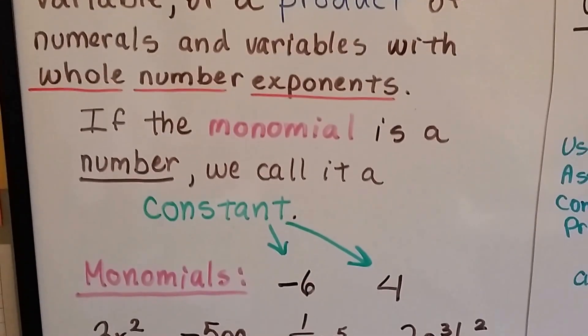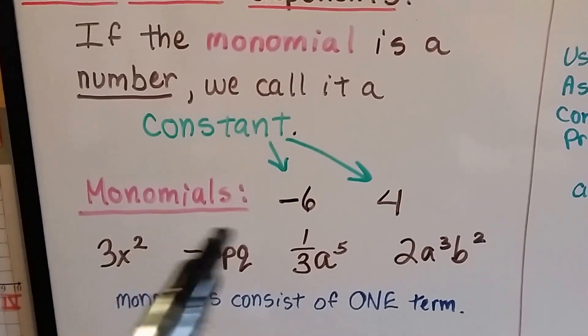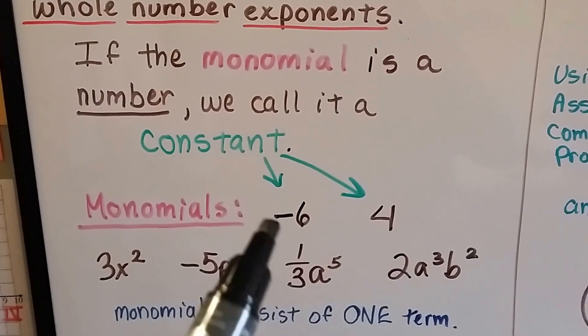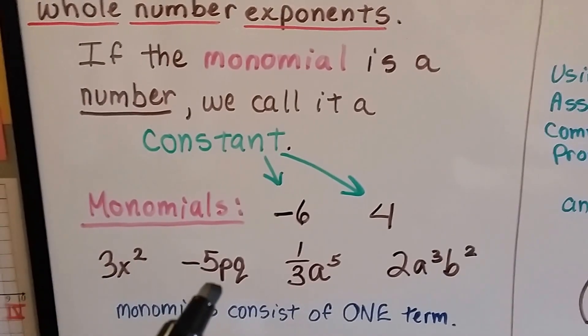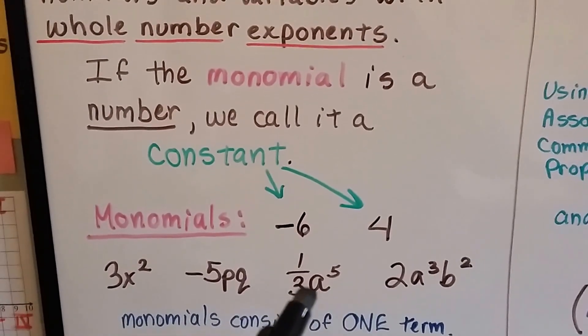If the monomial is a number, we call it a constant. So these are monomials. Negative 6 and 4, those are constants because they're numbers. Then we've got 3x squared, that's a monomial. Negative 5pq, that's a monomial. 1 third a to the fifth power, that's a monomial.